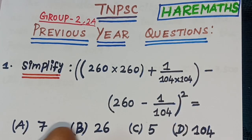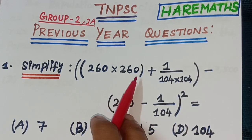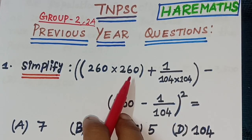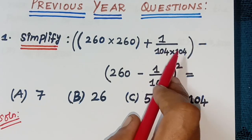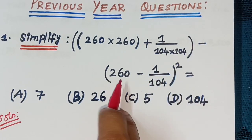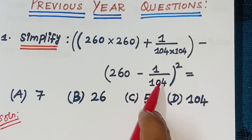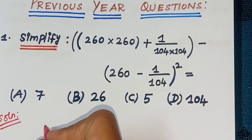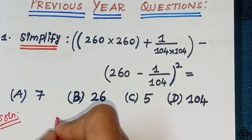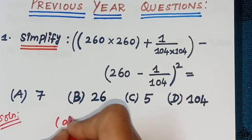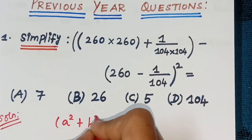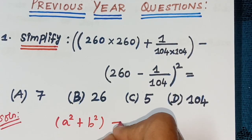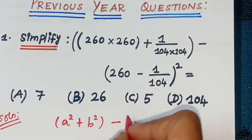Solution: Let A = 260 and B = 1/104. We use the identity A × A + B × B − (A − B) whole square, which gives A square plus B square minus (A minus B) whole square.